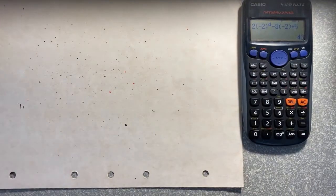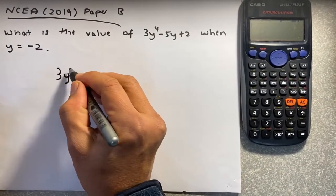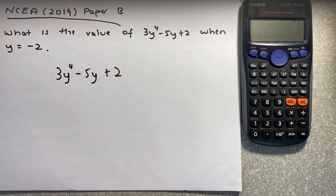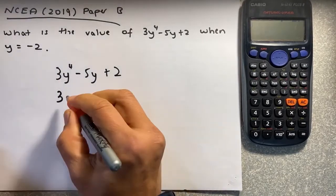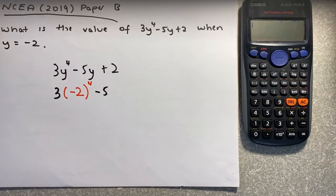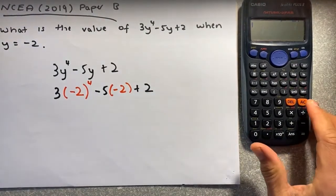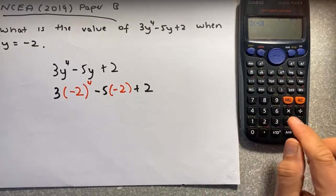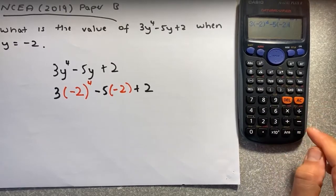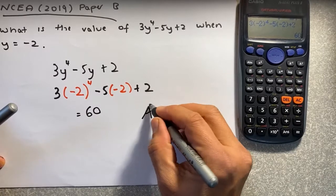Now we're going to look at another example. This is Paper B in the same year, 2019 NCEA. The equation is 3y⁴ minus 5y plus 2. You're going to substitute y equal to minus 2 into the equation. So 3 remains, and we put minus 2 to the power of 4, then minus 5, and we replace y with minus 2, plus 2 at the end. On the calculator: 3, bracket, minus 2, close bracket, to the power of 4, minus 5, bracket, minus 2, close bracket, plus 2. The answer is 60, and that will give you an achieve in Level 1.